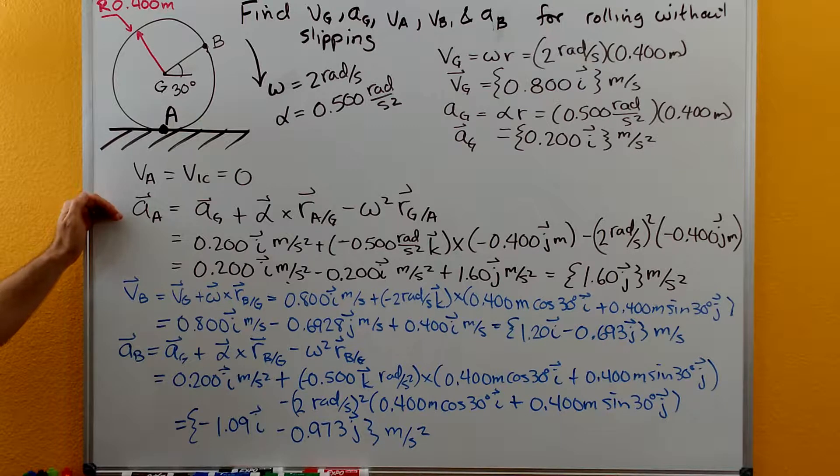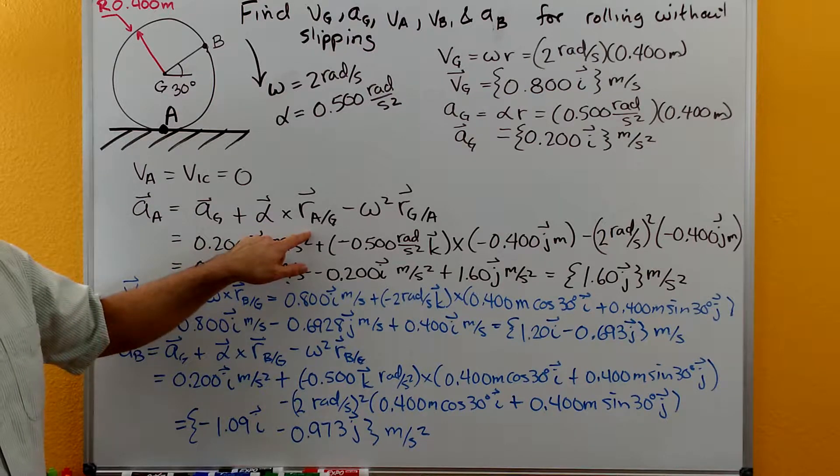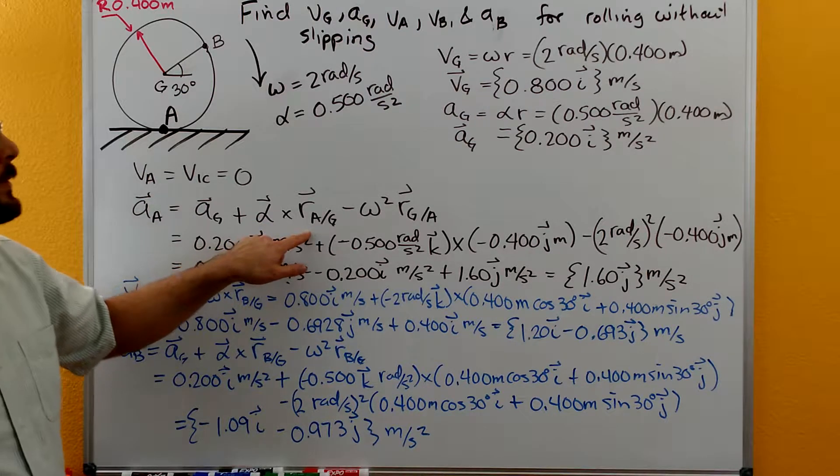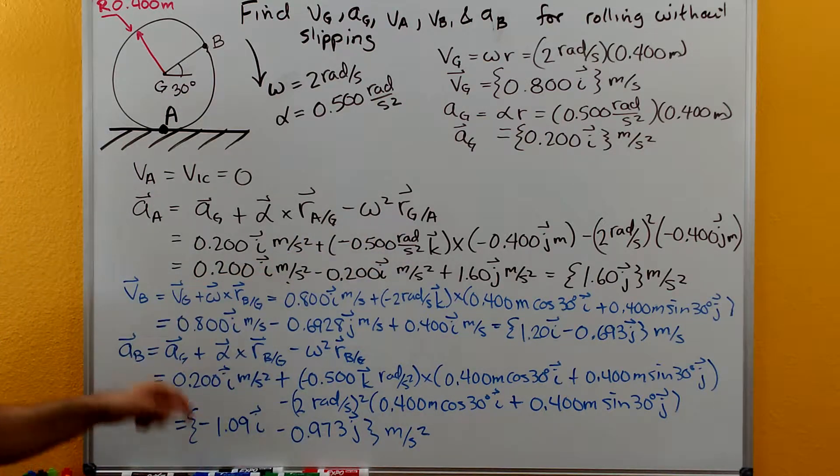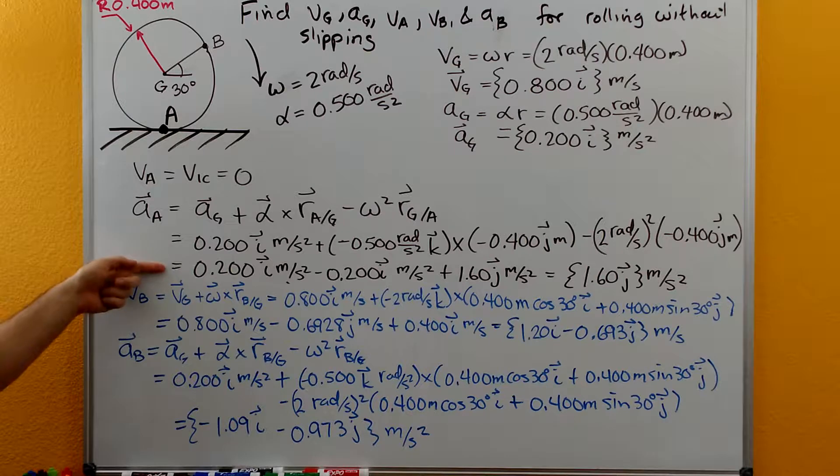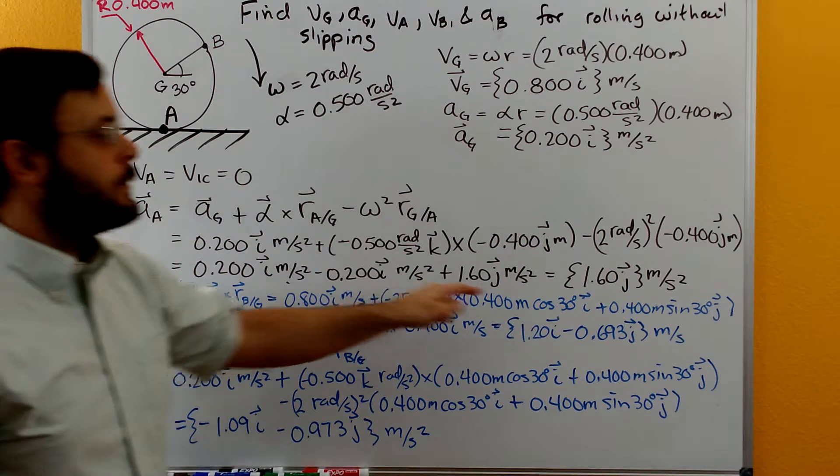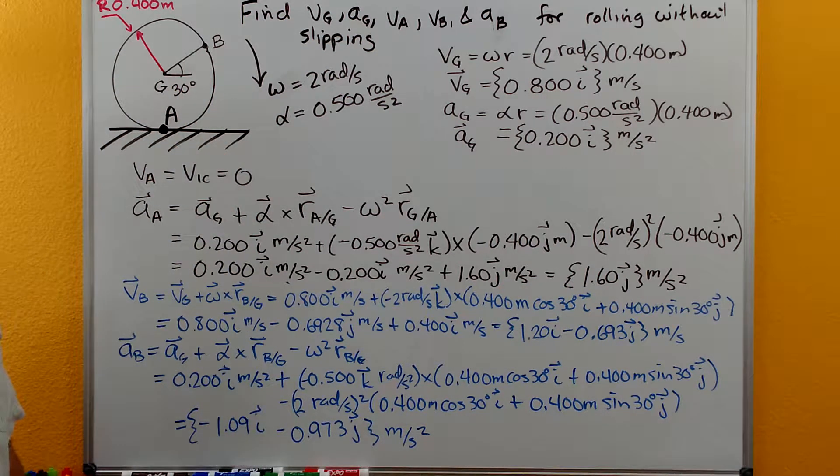The acceleration at A we can develop that as the acceleration of G plus alpha cross the position vector from A to G minus omega squared times the position vector from A to G. So it gives us this vector equation here. Doing the vector arithmetic gets us to this line. And then when we're done we get 1.60 J meters per second squared.